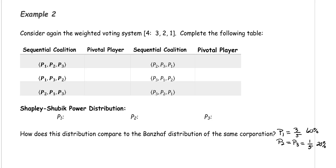With the Shapley-Shubik power distribution, we need to consider the sequential coalitions, and each player will get added into the sequential coalition one player at a time in the order that they are in the sequential coalition. The first player that makes this into a winning coalition when they get added in is what we call the pivotal player.